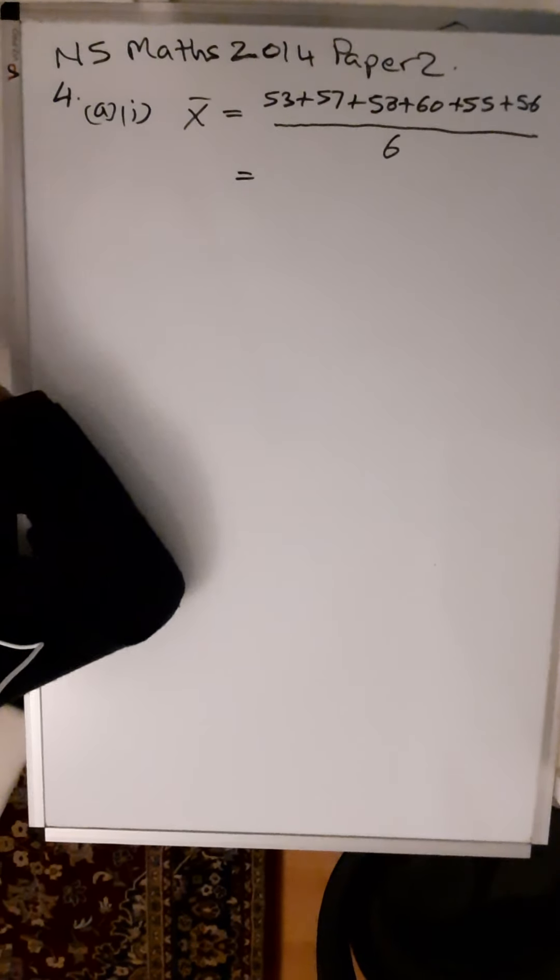53 plus 57 plus 58 plus 60 plus 55 plus 56, and you divide by the number of results, which is 6.